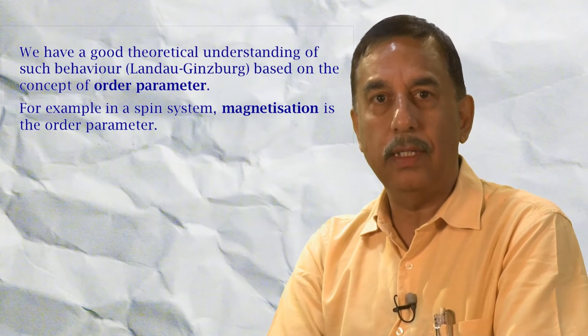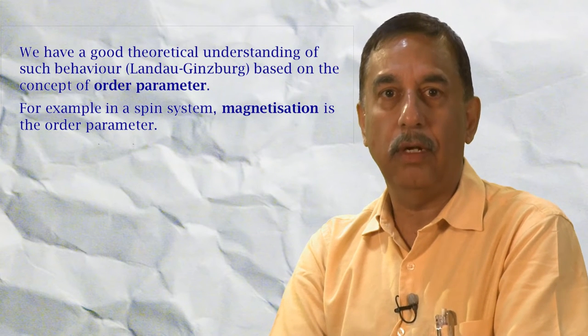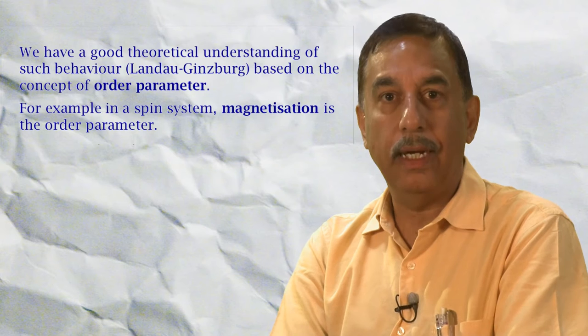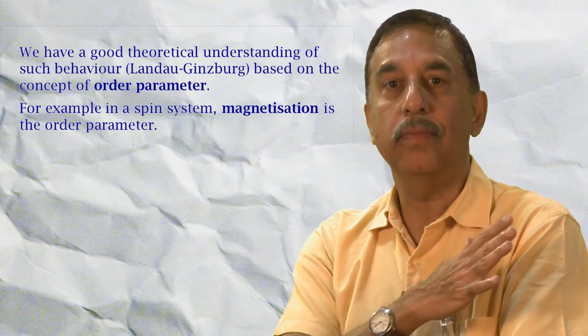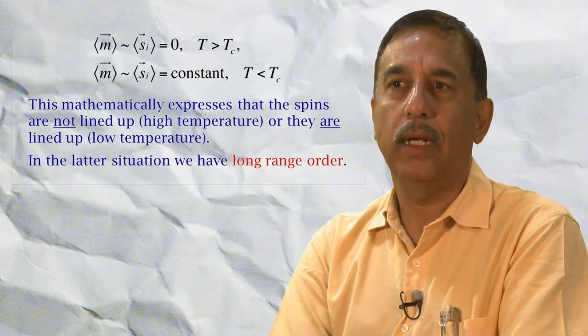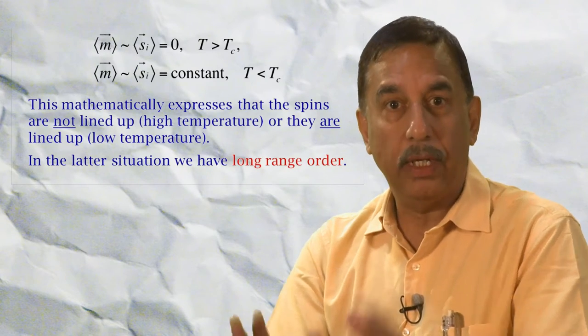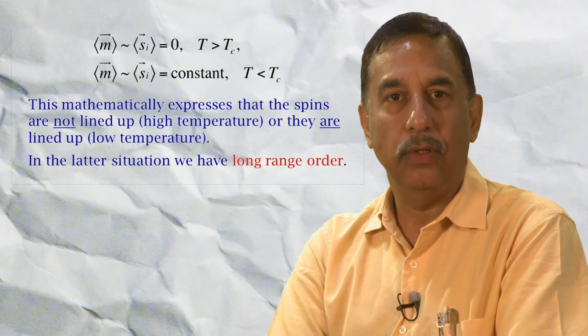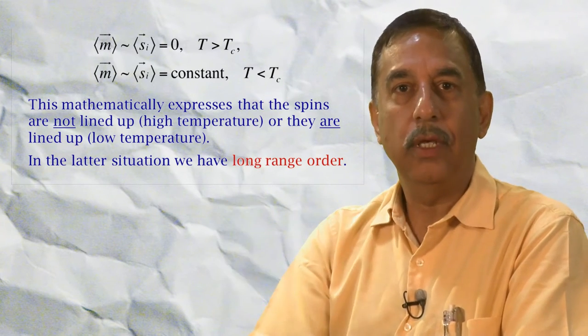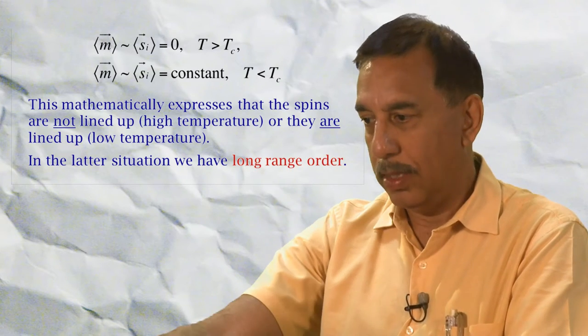We have a good understanding at the theoretical level of such behavior. It is called Landau-Ginzburg theory, and it uses an order parameter, which is the average magnetization of the sample, which at high temperatures is 0 because of the randomness of the spins, but at low temperatures it is not 0. So this order parameter jumps as we go from high to low temperatures.